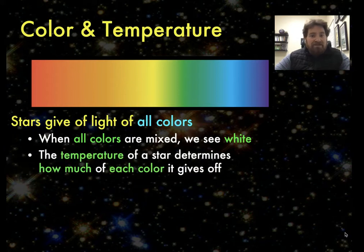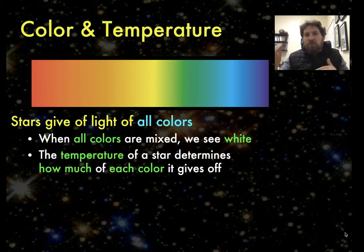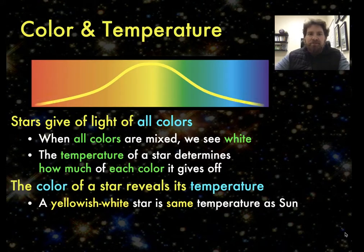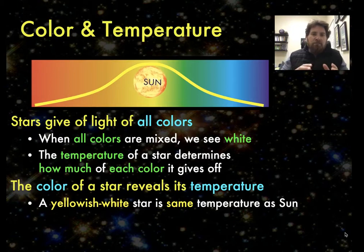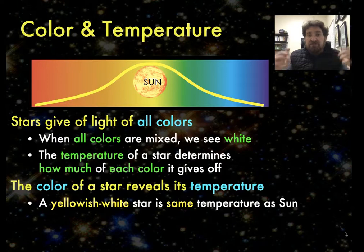I say whitish because the temperature of a star determines how much of each color it gives off. It does not give off all colors equally. Stars with about the temperature of the sun give off more of the middle wavelengths, the yellowish wavelengths, and less of the others. So when those wavelengths mix together, we see those stars as sort of a yellowish white.